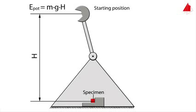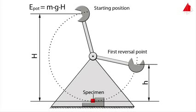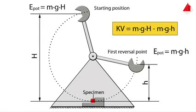After the pendulum has been released, the hammer moves downwards, hits the specimen, and then only swings to height h. Exactly at the first reversal point, the pendulum again only has potential energy, which is m times g times h. The energy that has been absorbed by the specimen is called notch impact energy, KV. It corresponds to the difference between the two potential energies.